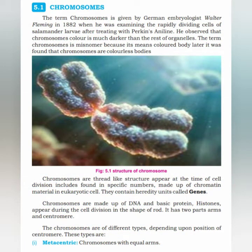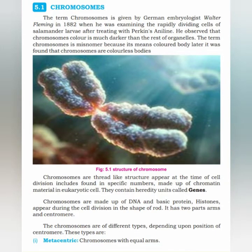The term chromosome was given by German embryologist Walter Fleming in 1882, when he was examining the rapidly dividing cells of salamander larvae after treating with Perkin's aniline dye. He observed that chromosomes' color was darker than the rest of the organelles. The term chromosome is a misnomer because it means 'color body,' but it was later found that chromosomes are actually colorless bodies.